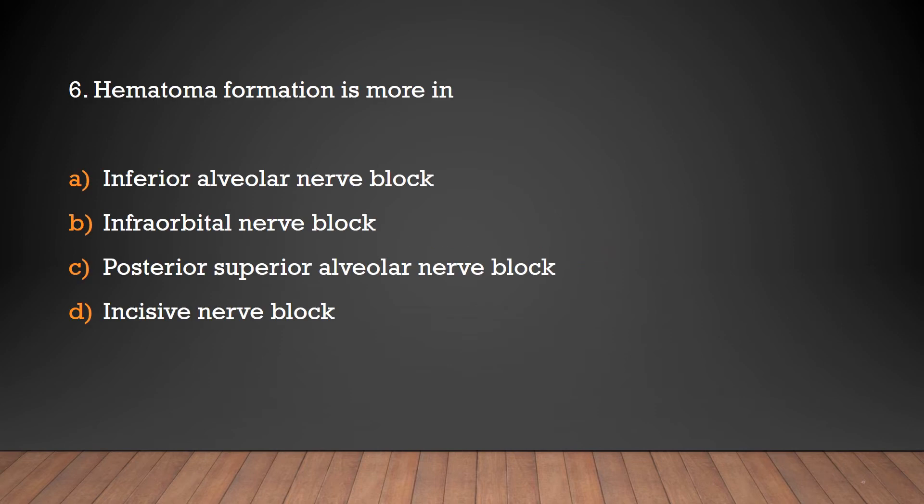Hematoma formation is more common in: Inferior alveolar nerve block, Infraorbital nerve block, Posterior superior alveolar nerve block, or Incisive nerve block?